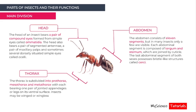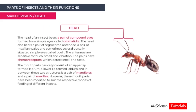The head of the insect bears a pair of compound eyes formed from simple eyes called ommatidia, a pair of segmented antennae, a pair of maxillary palps, and sometimes dorsally situated simple eyes called ocelli. The antennae are sensitive to touch, smell, and vibration. The palps have chemoreceptors which detect smell and taste. The mouth part consists of an upper lip called the labrum, a lower lip called the labium, and in between, a pair of mandibles and maxillae.